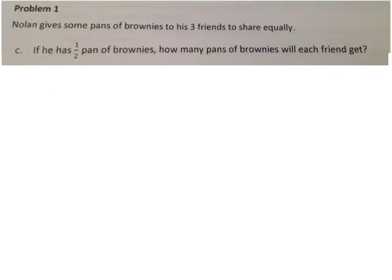Now let's say that Nolan has just a half a pan of brownies, still sharing with three friends equally. How many pans of brownies will each friend get? We know that our answer will be less than one-third pan, because we have less to share but we're sharing with the same number of people. So our answer will be less than one-third pan.